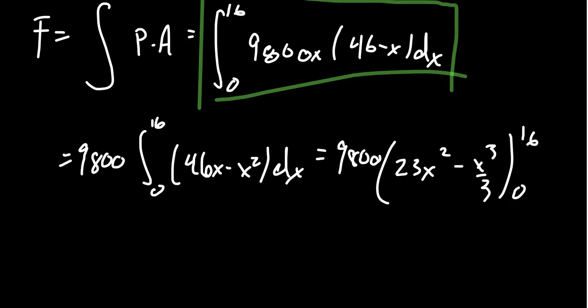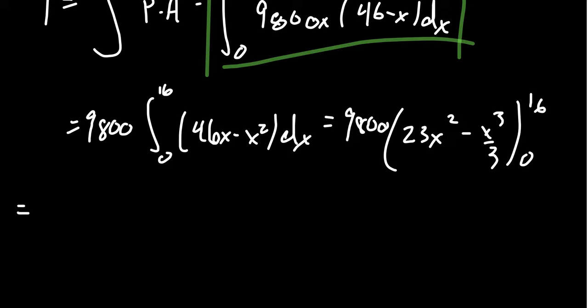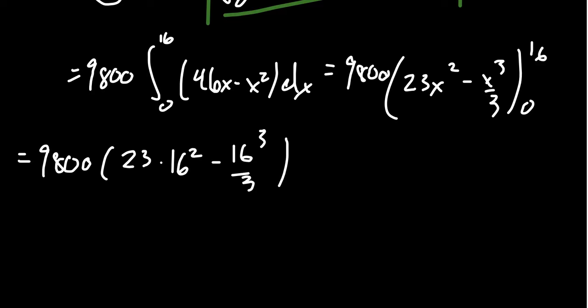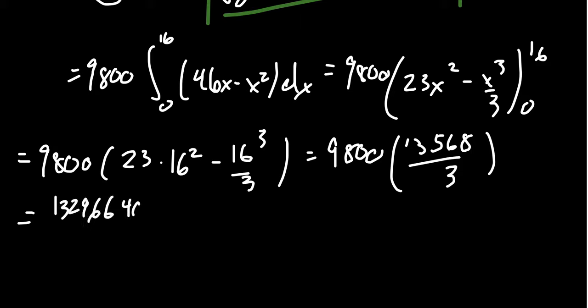When you plug in the 0, everything will vanish. When you plug in the 16, not so much. So you get 9,800 times 23, multiply that by 16 squared minus 16 cubed over 3. This is the point where I'm just going to put this in a calculator to help me simplify this. If you take 23 times 16 squared minus 16 cubed over 3, you're going to end up with 13,568 all over 3 times that by 9,800. Your exact answer would be 132,966,400 over 3.